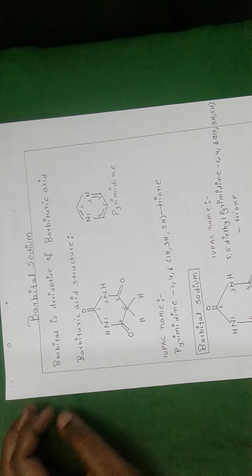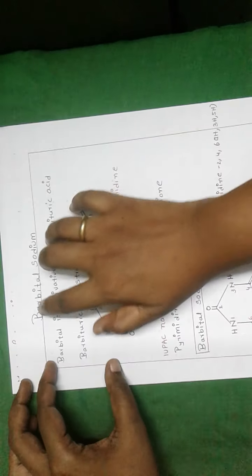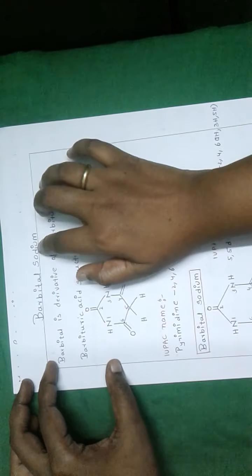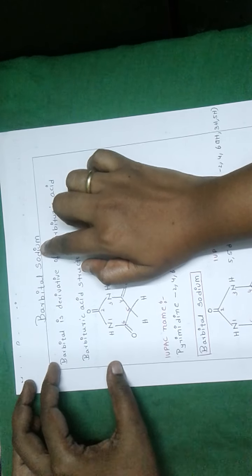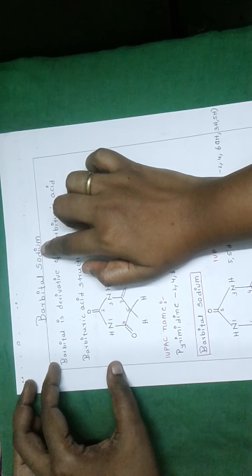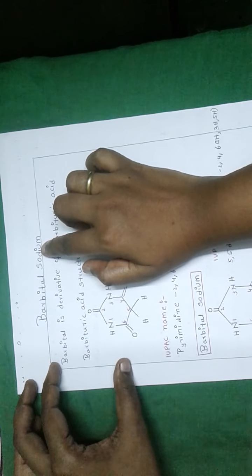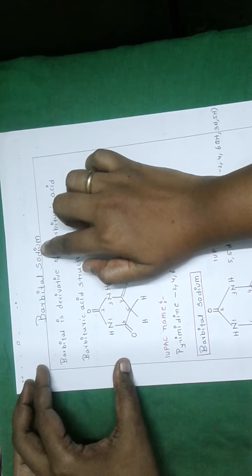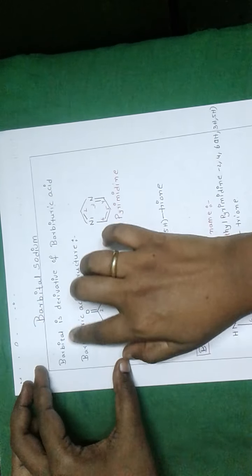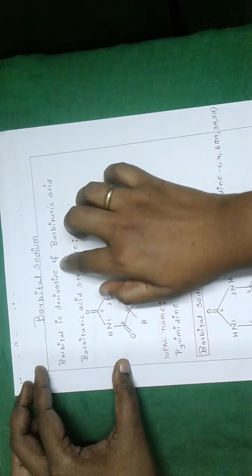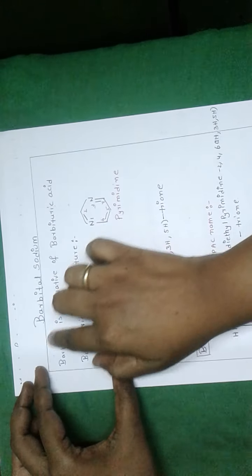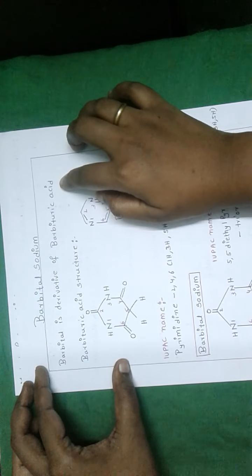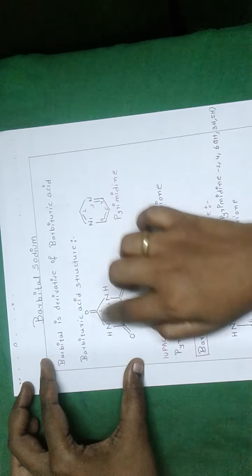Good morning students. Today I'm discussing barbital sodium. Barbital sodium belongs to the therapeutic category of sedatives and hypnotic drugs. Barbital is a derivative of barbituric acid — it is derived from barbituric acid.